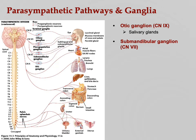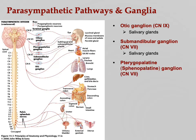The submandibular ganglion, found under the mandible, serves the sublingual and submandibular salivary glands, also activated by the parasympathetic nervous system — in this case via cranial nerve 7. Cranial nerve 7 also goes to the pterygopalatine (or sphenopalatine) ganglion, connected with the sphenoid bone. These fibers go to the nasal mucosa, the pharynx, and the lacrimal glands — producing mucus for swallowing and tears to clean the eye. This is why in Bell's palsy, affecting cranial nerve 7, patients have abnormal tearing.